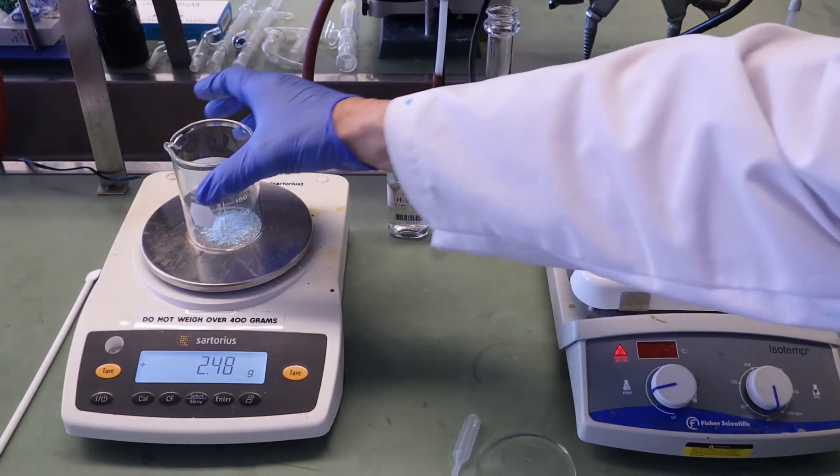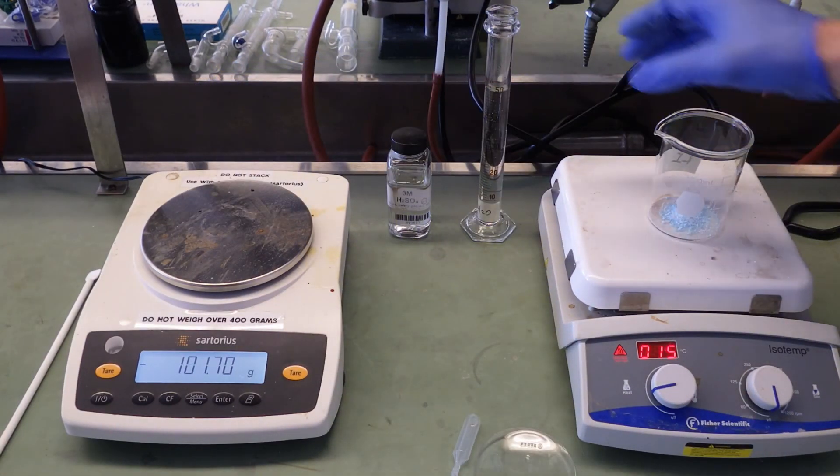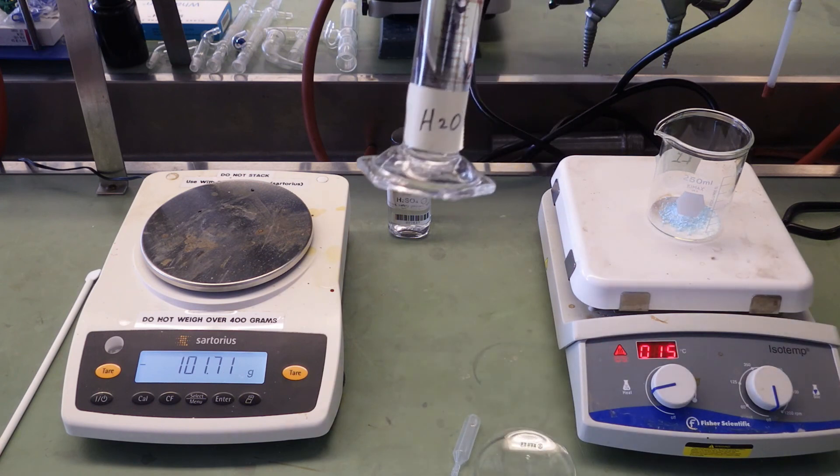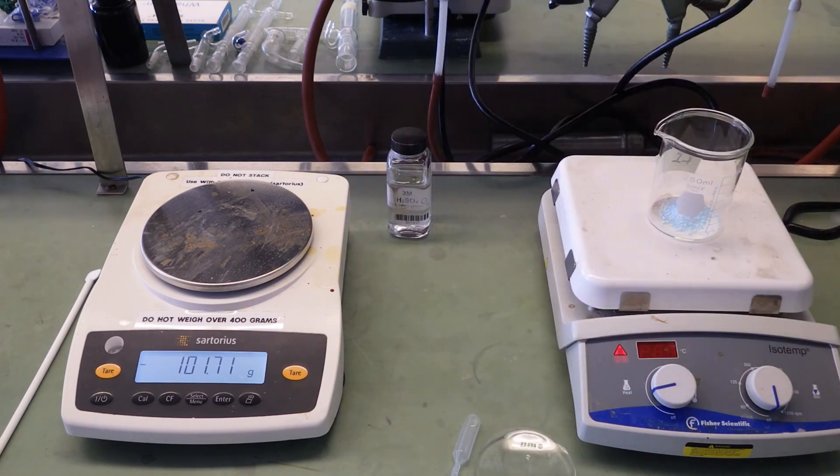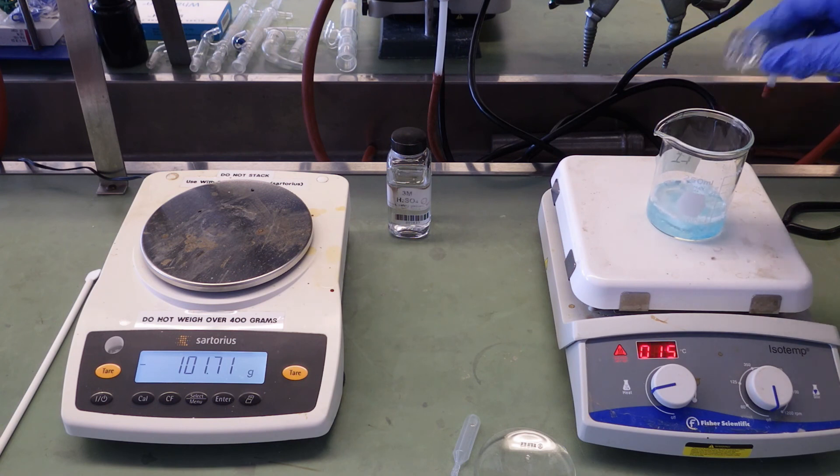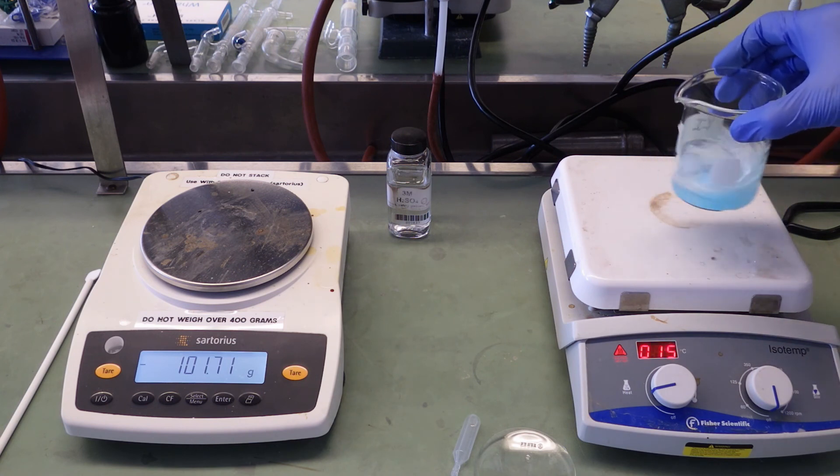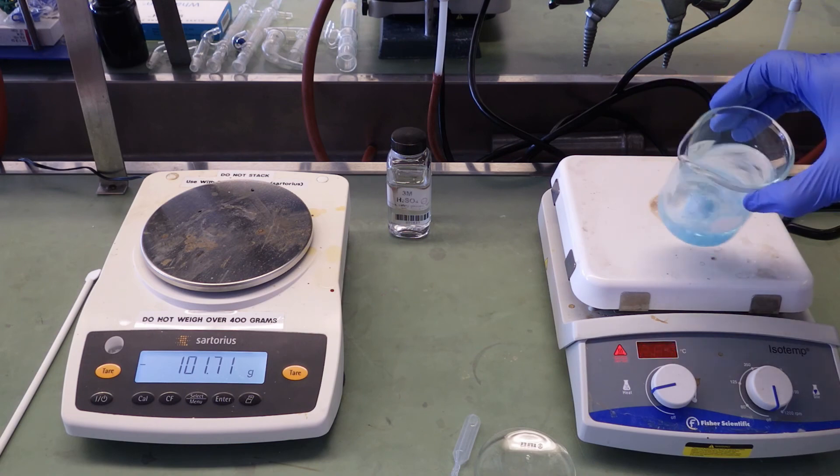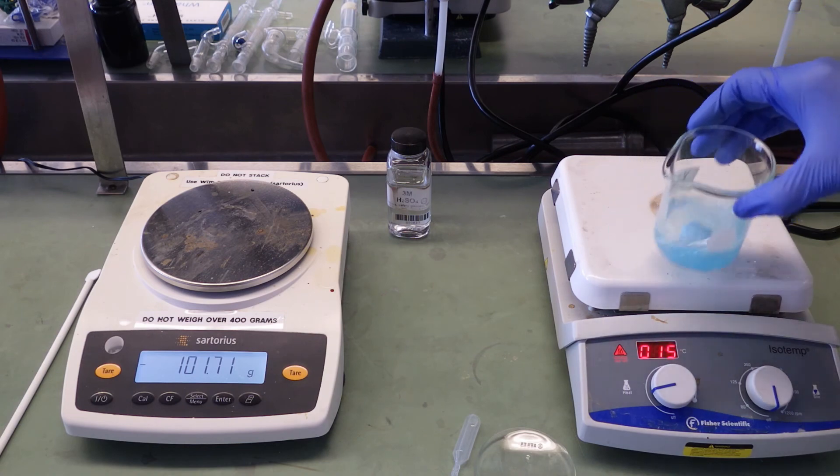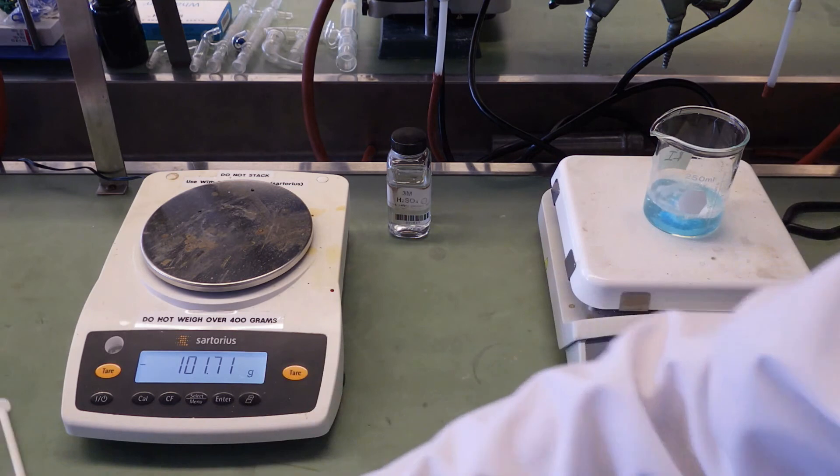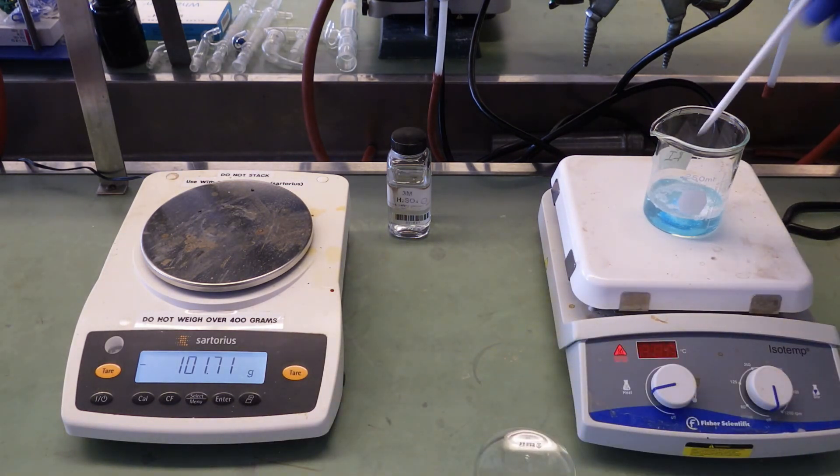Next we want to dissolve this. We'll use 50 milliliters of distilled water. Kind of chunky in the bottom in the center there. I'll break that up with a polypropylene stir rod.